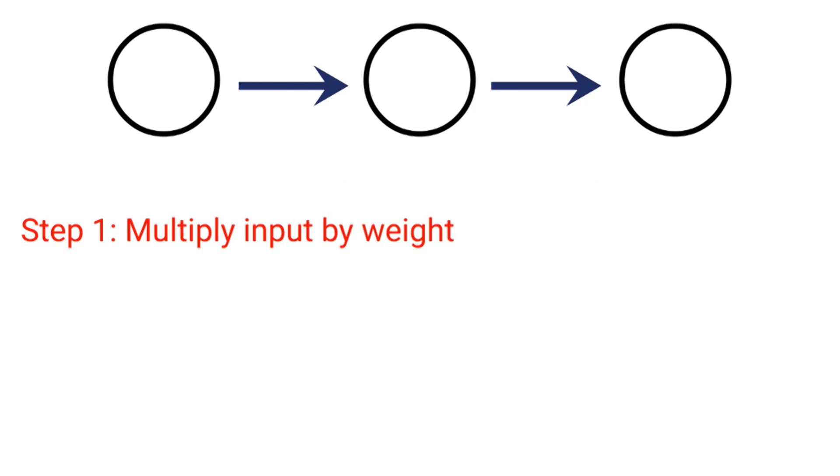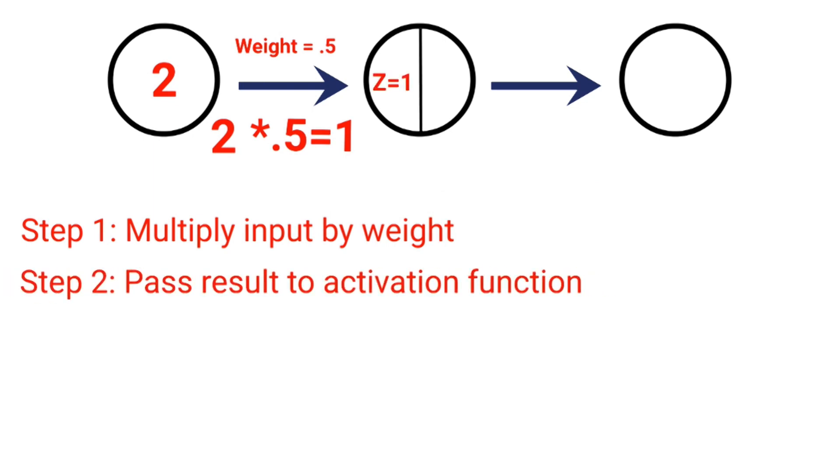Now let's go ahead and feed some data into our neural network just for review. So step one, we take our input and multiply it by our weight. So in this example, let's use 0.5 and our input of 2. So 2 times 0.5 equals 1. That becomes Z. We then pass that result Z to our activation function. In this example, we'll use the sigmoid activation function, which you can see on the screen. And when we do that, we get a result of 0.7.